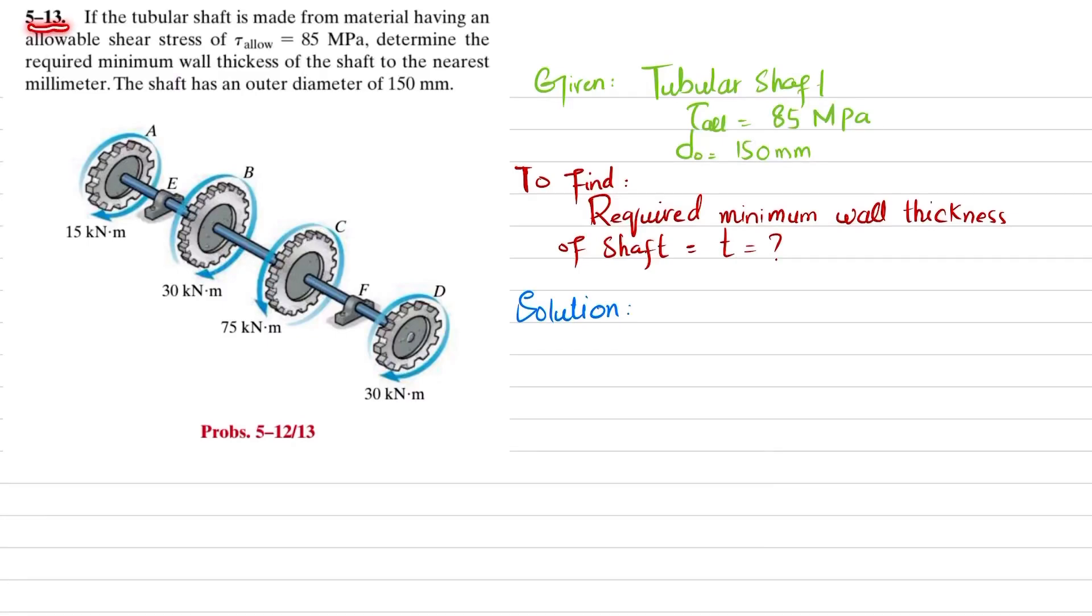Welcome back to Problem 5-13. The statement is: if the tubular shaft is made from material having allowable shear stress of 85 megapascal, determine the required minimum wall thickness of the shaft to the nearest millimeter. The shaft has an outer diameter of 150 millimeter.